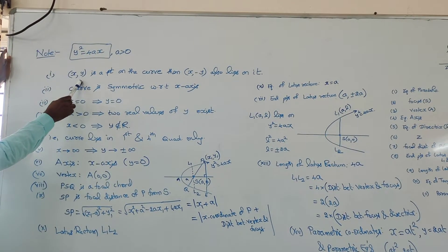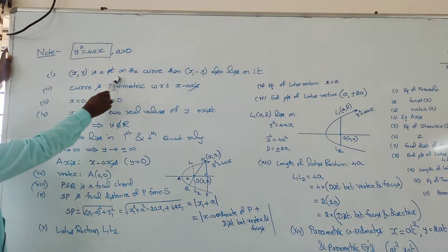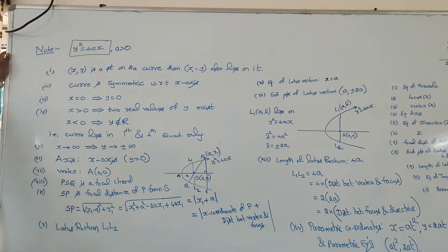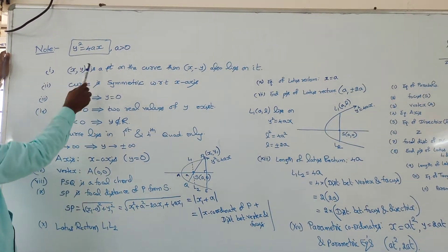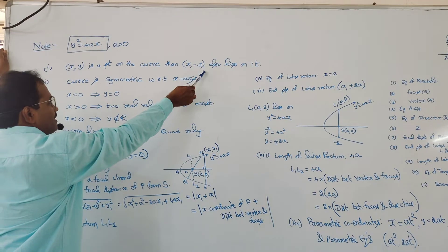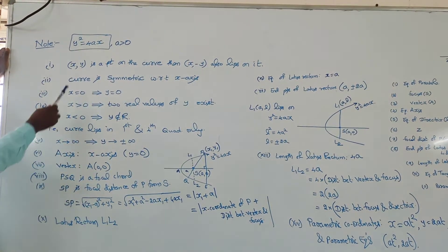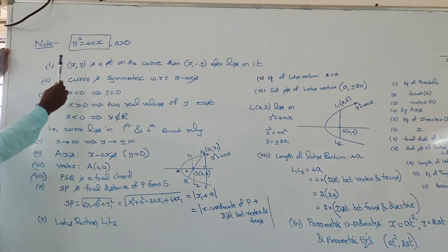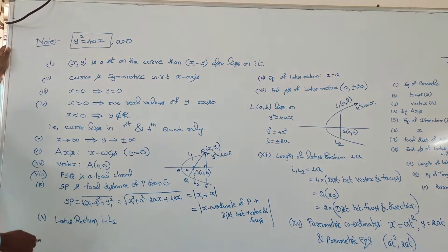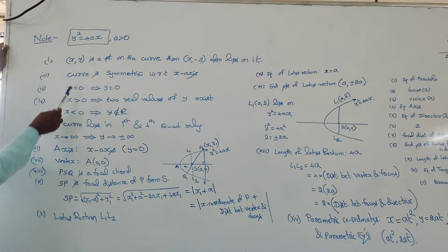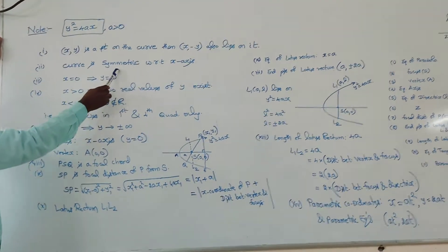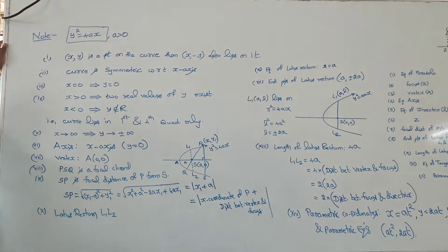If (x, y) is a point on the curve that satisfies the equation, then you can also find that (x, −y) lies on it. That is, whenever (x, y) lies on the curve, (x, −y) also lies on it. So from this you can conclude the curve is symmetric with respect to the x-axis.